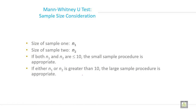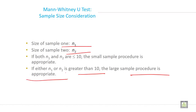The size of sample 1 is called N1 and the size of sample 2 is called N2. If both N1 and N2 are less than or equal to 10, the small sample procedure is appropriate. If either N1 or N2 is greater than 10, the large sample procedure is appropriate. So there are two procedures: small sample procedure and large sample procedure.